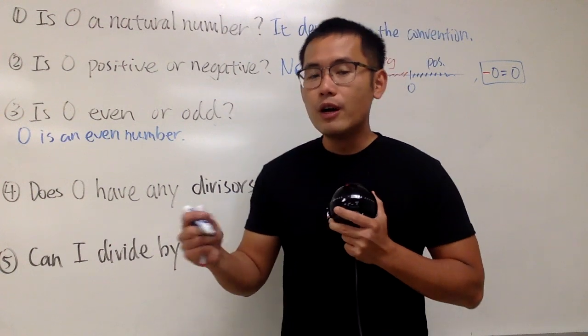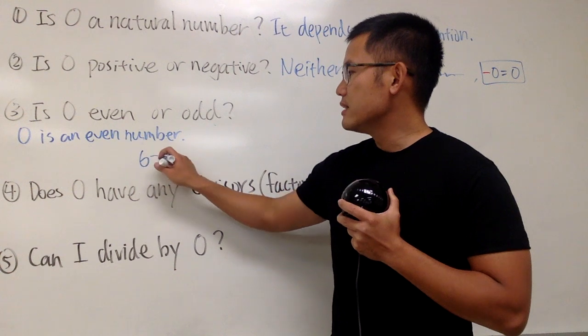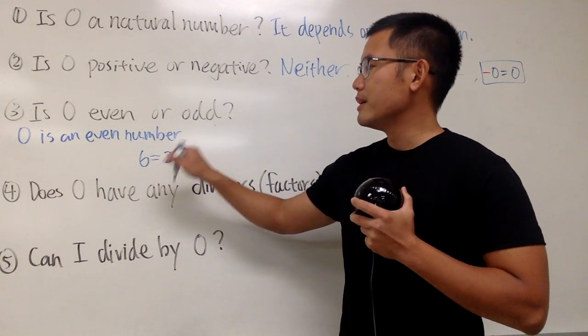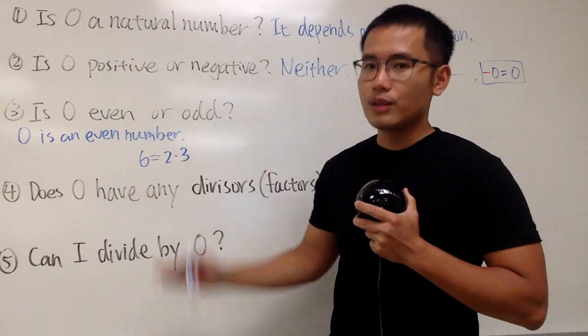Well, whenever you have a multiple of 2, that is an even number. For example, 6 is the same as 2 times 3. 6 is a multiple of 2 because 2 times 3 is equal to 6. So 6 is even.